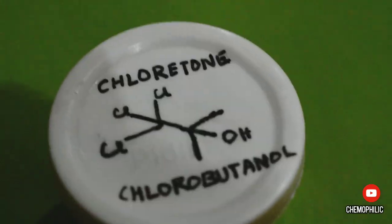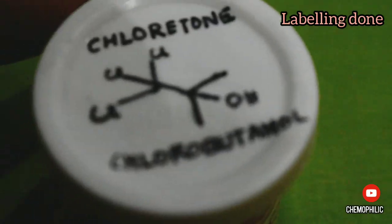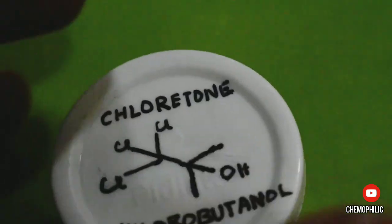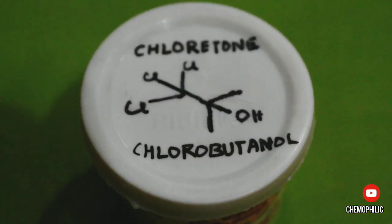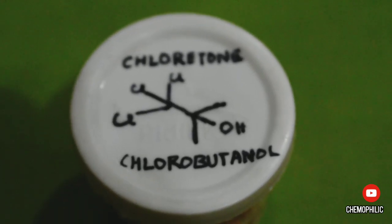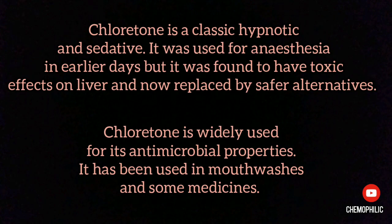Chloritone has a higher vapor pressure so it sublimates out in room temperature and must be kept in cool places to avoid losses. Chloritone was used as a hypnotic but it has ill effects on liver and is now replaced by safer alternatives. It is also found as an active ingredient in mouthwashes and some medicines for its antimicrobial properties.